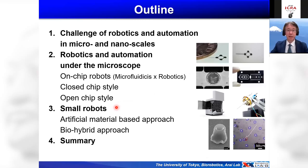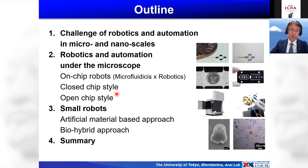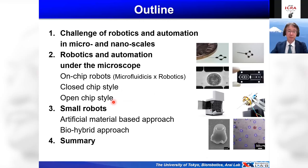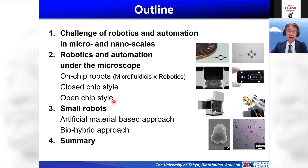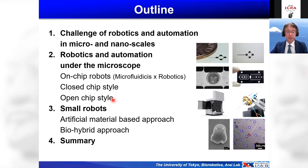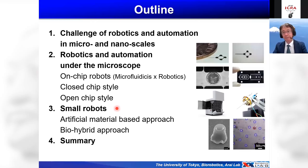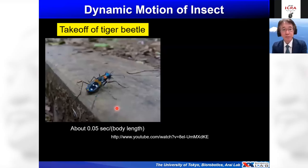I will talk a little bit about the challenge of robotics and automation in micro and nanoscales. I have been studying robotics and automation under the microscope for more than 20 years. I call it on-chip robot — it is an integration of microfluidics and robotics. I will summarize my talk, then talk about small robots, and finally conclude.